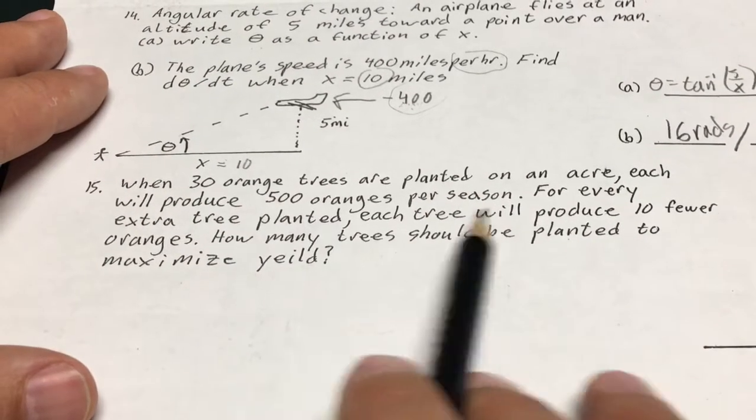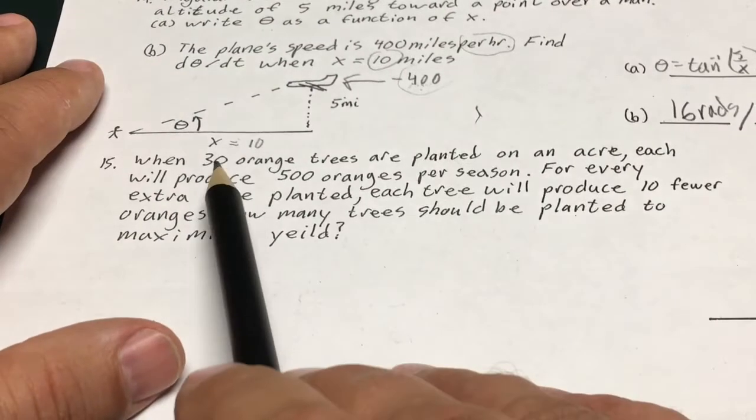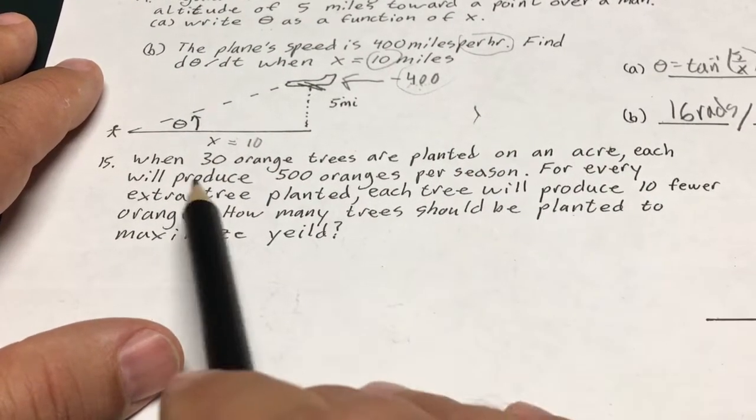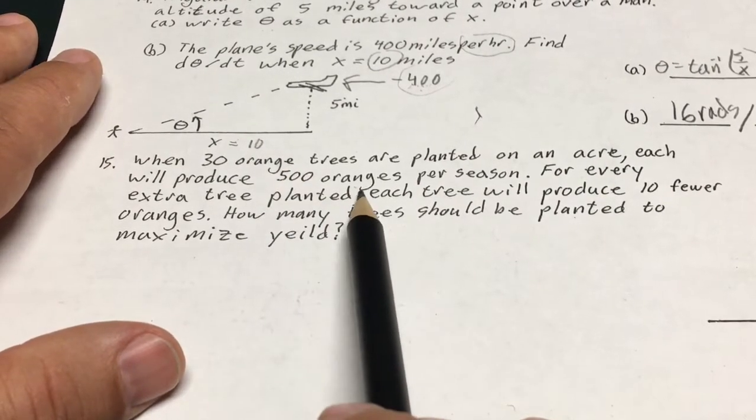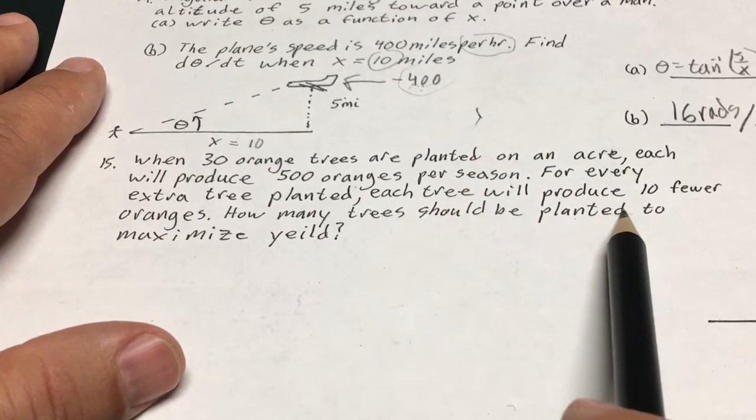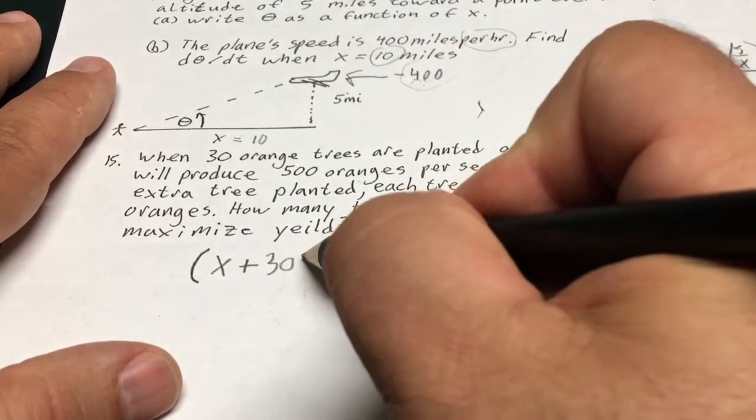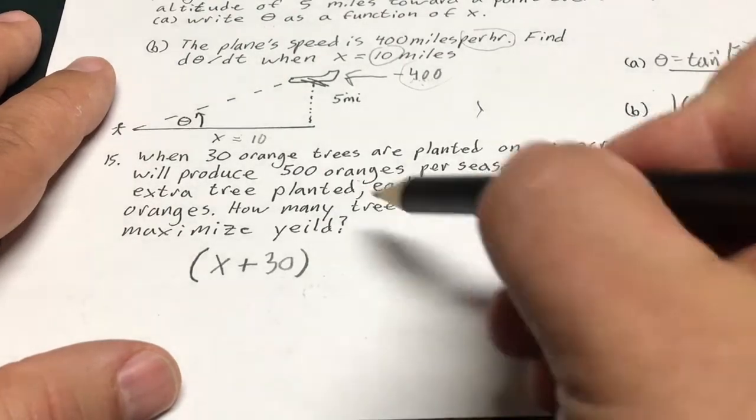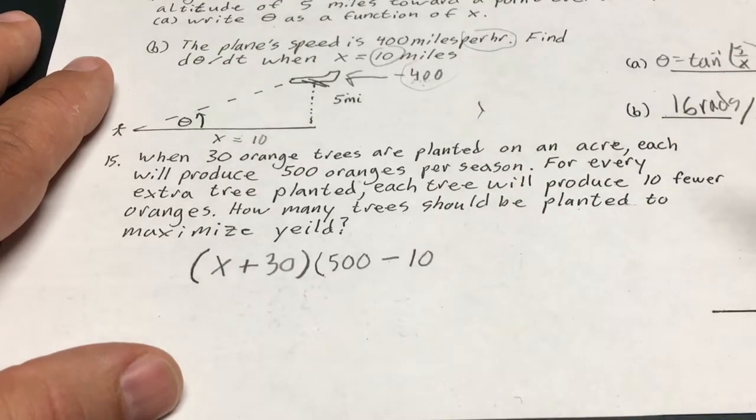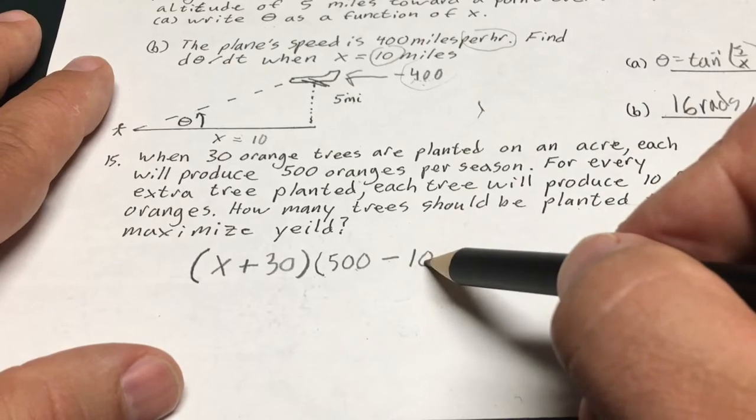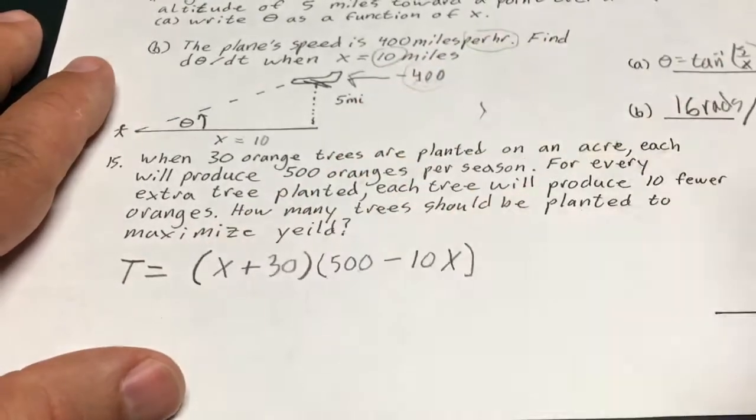This is one of these optimization problems. And I never really like these. They always kind of scare me because there's no picture I can draw. Like with the other problems. I like having a diagram so I can put my brain around what's happening. But basically, when 30 orange trees are planted on an acre, each will produce 500 oranges. That's wonderful. For every extra tree, now the deal is when you plant more trees, it's going to starve those original trees a little bit. Each tree will produce 10 fewer oranges. So how many trees should be planted to maximize the yield? I believe the set up for this is going to be x plus 30 times 500 oranges. But those 500 oranges decrease for every 10 trees. 500 oranges decreases by 10 oranges for every tree extra you plant. And now I have to foil this out. And you might set this up as like a total equals that amount.